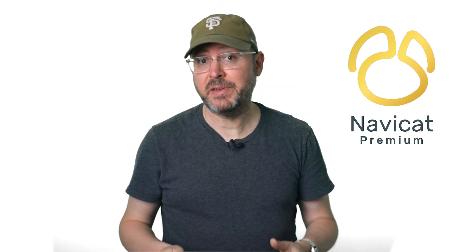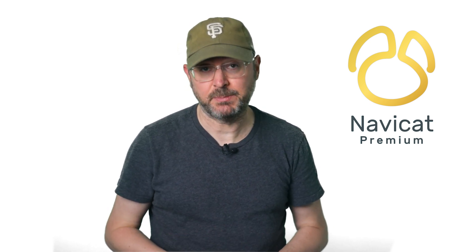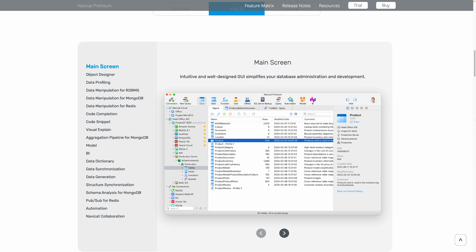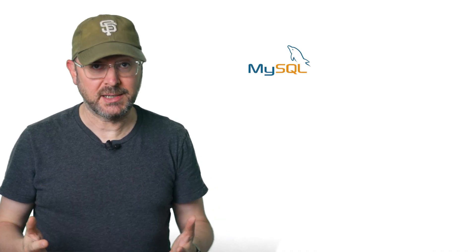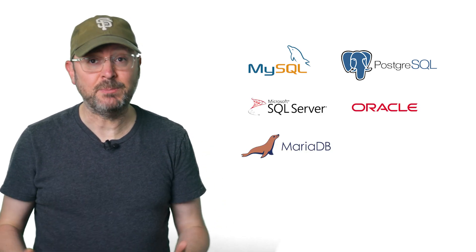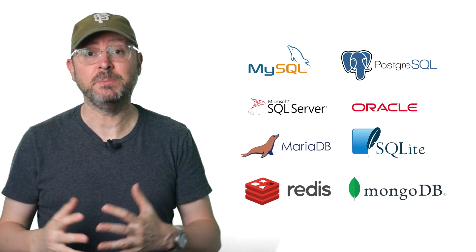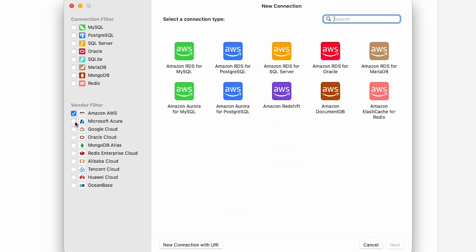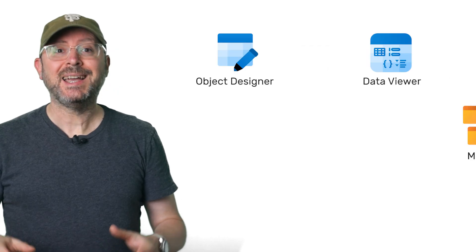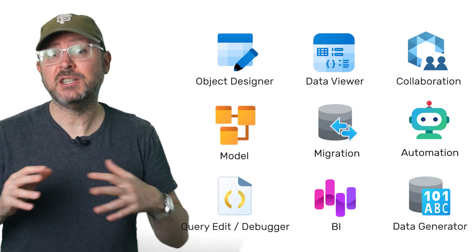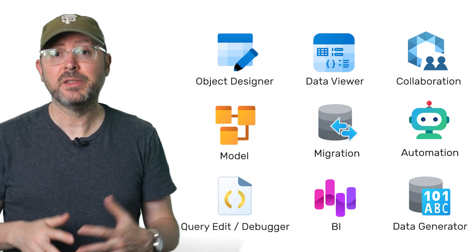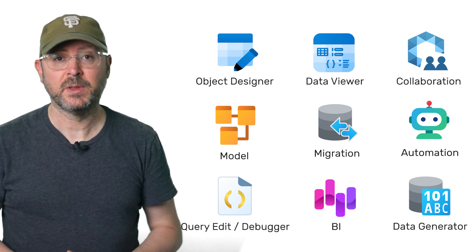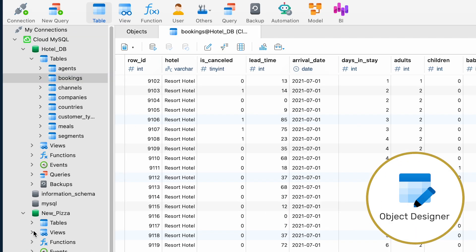Now let me tell you more about the sponsor of today's video, NaviCat. I've been a user of NaviCat Premium for over 10 years now. It is by far and away my tool of choice for working with SQL databases. NaviCat Premium is a database development and management tool that allows you to simultaneously connect to MySQL, PostgreSQL, SQL Server, Oracle, MariaDB, SQLite, Redis and MongoDB databases from a single application. It's also compatible with cloud databases in places like AWS, Azure, GCP and Oracle Cloud. It is an incredibly powerful yet easy to use tool that can do everything from database development and modeling through to building out interactive reports, and everything in between. Manage tables, views, functions and more via a clean and intuitive UI.